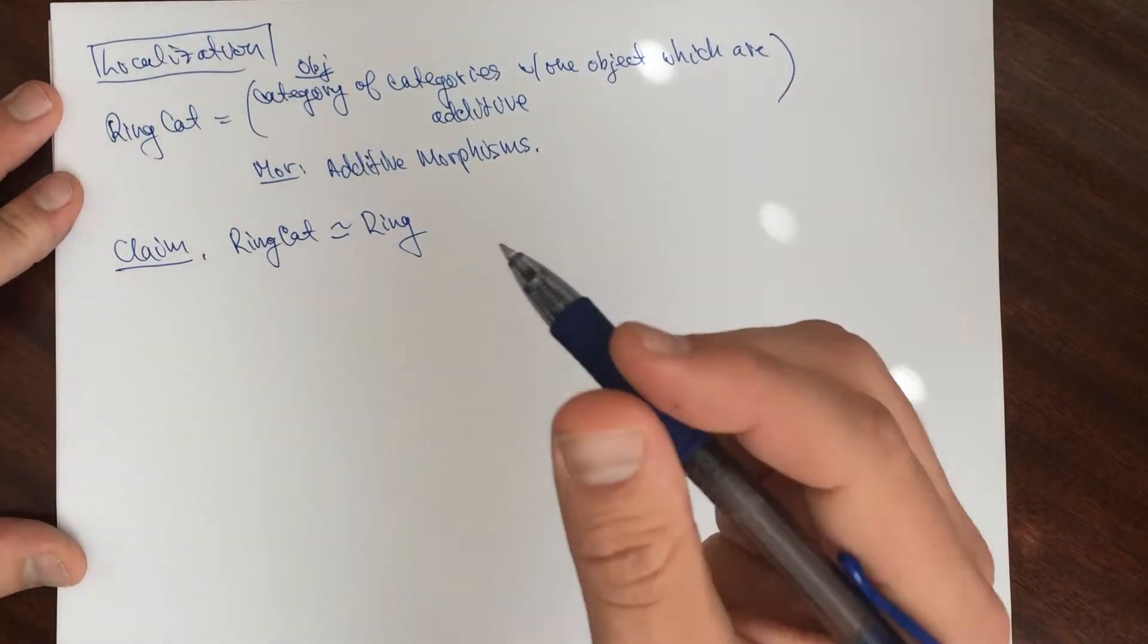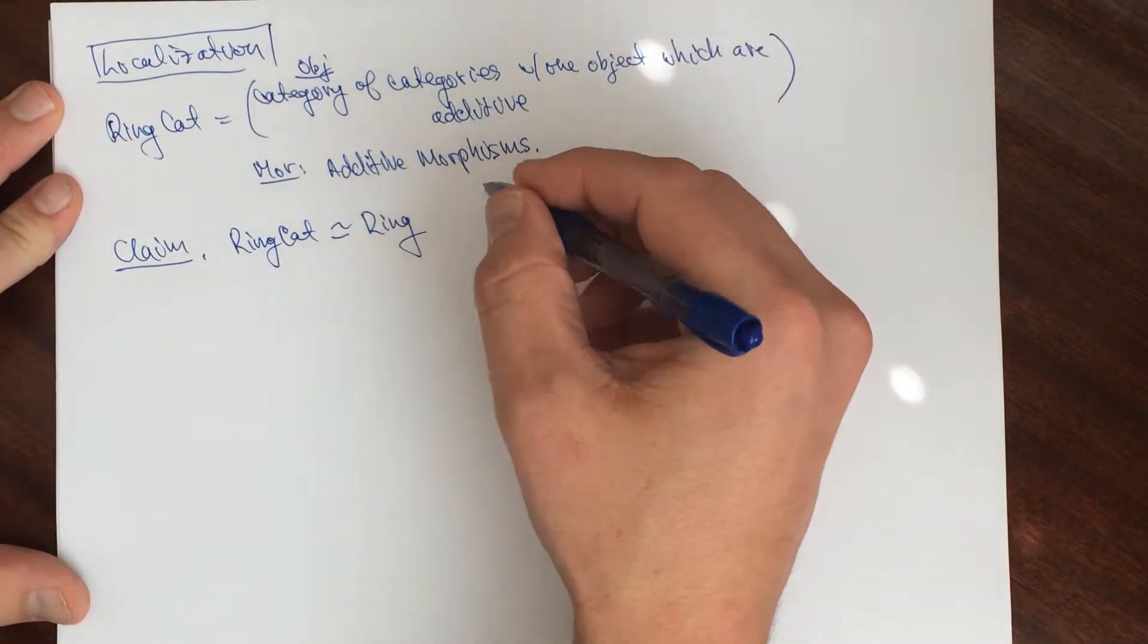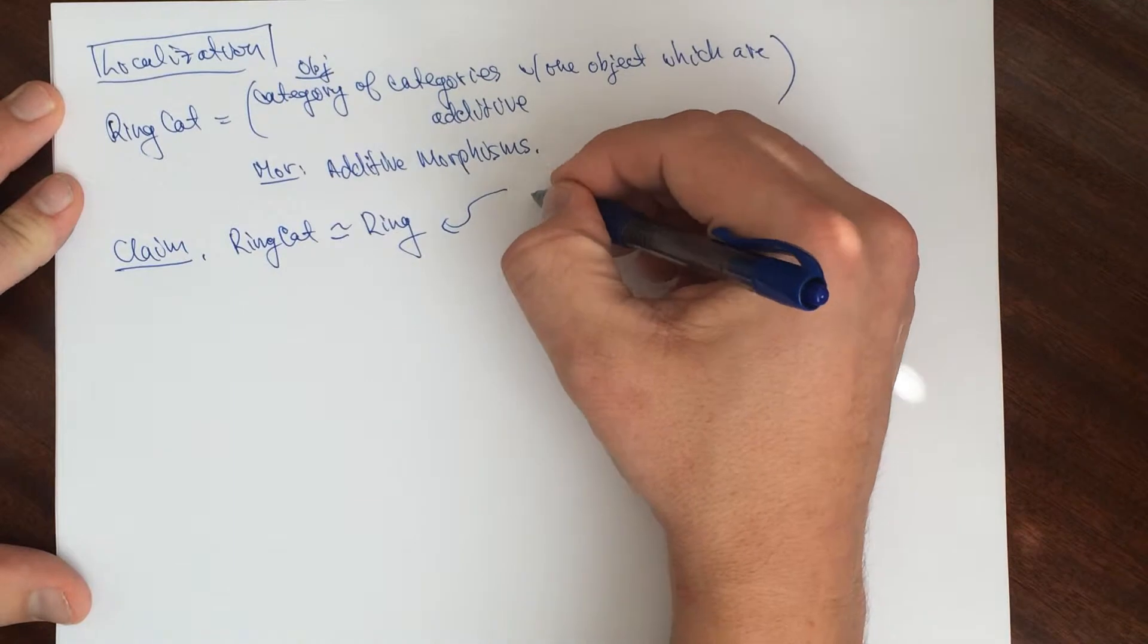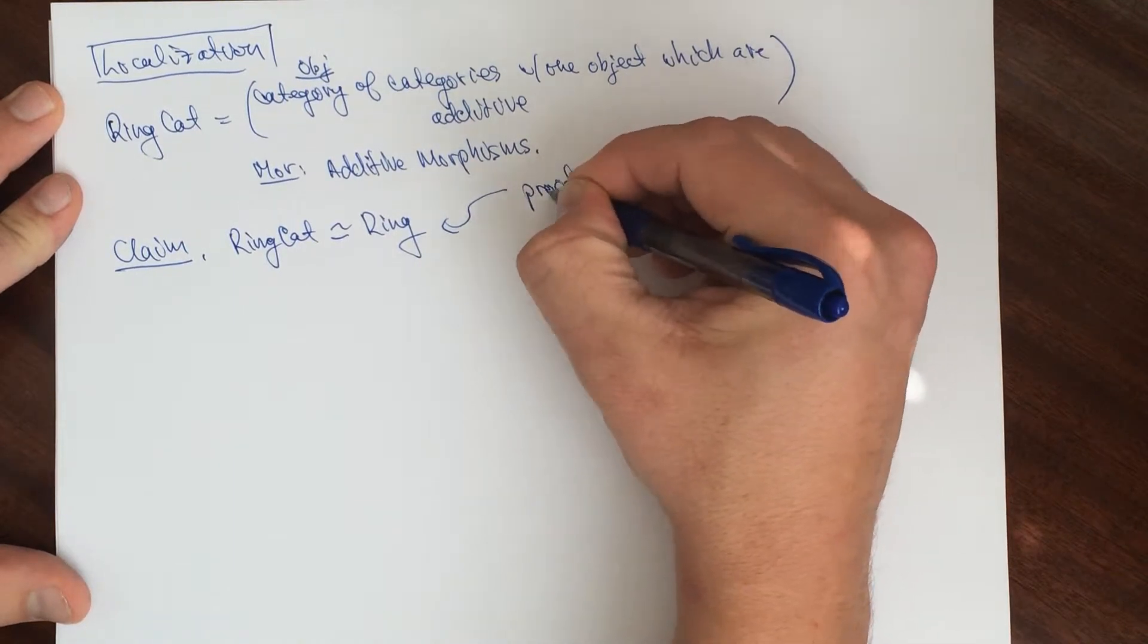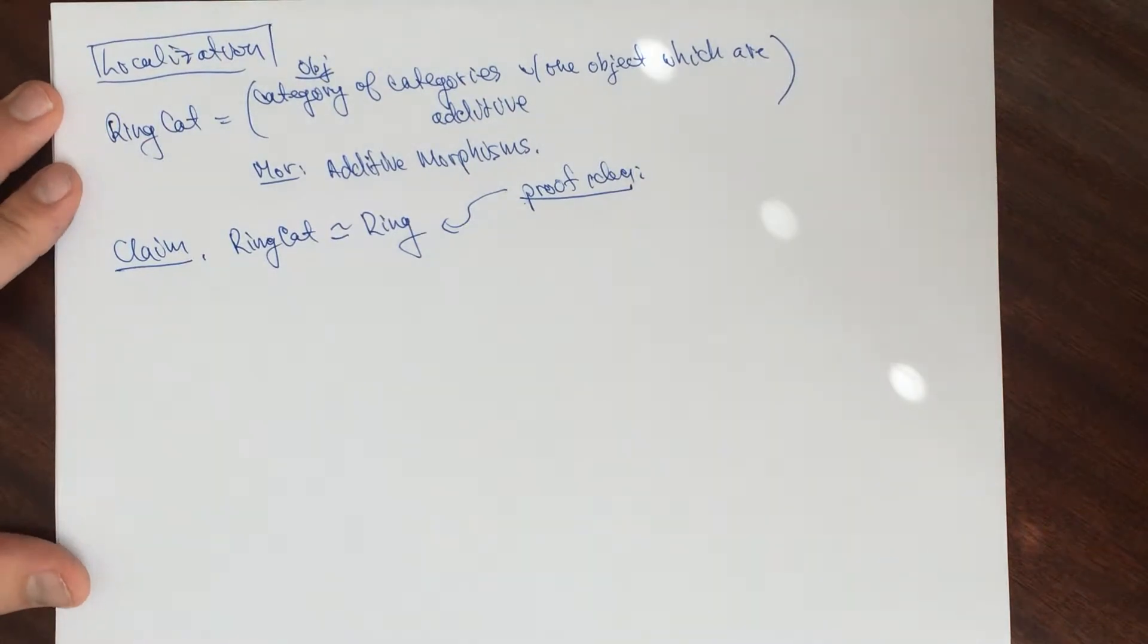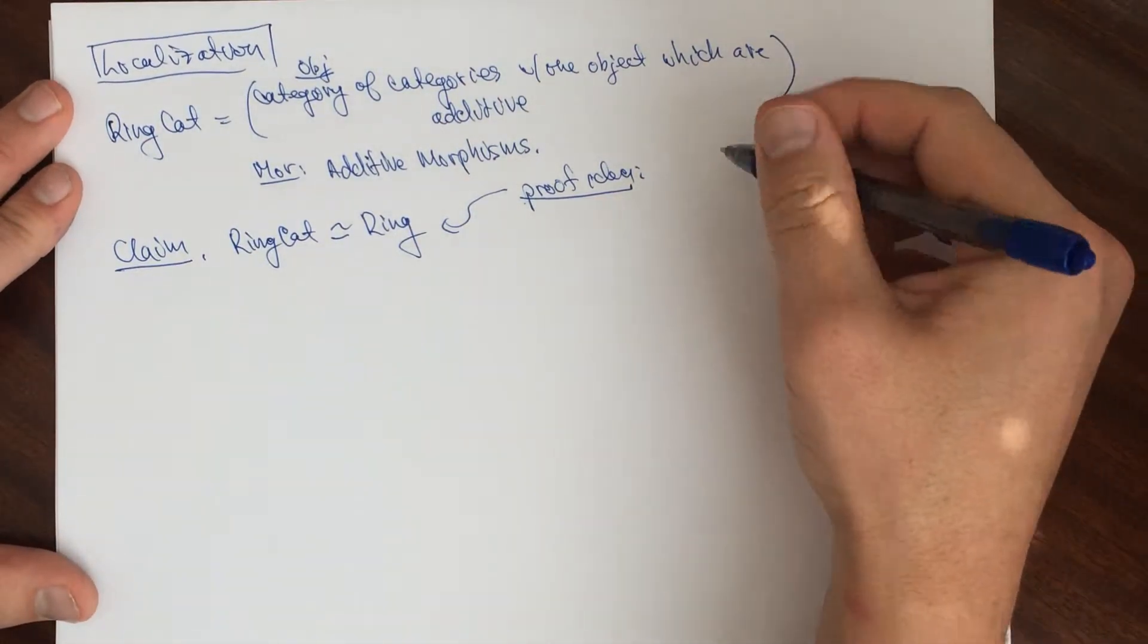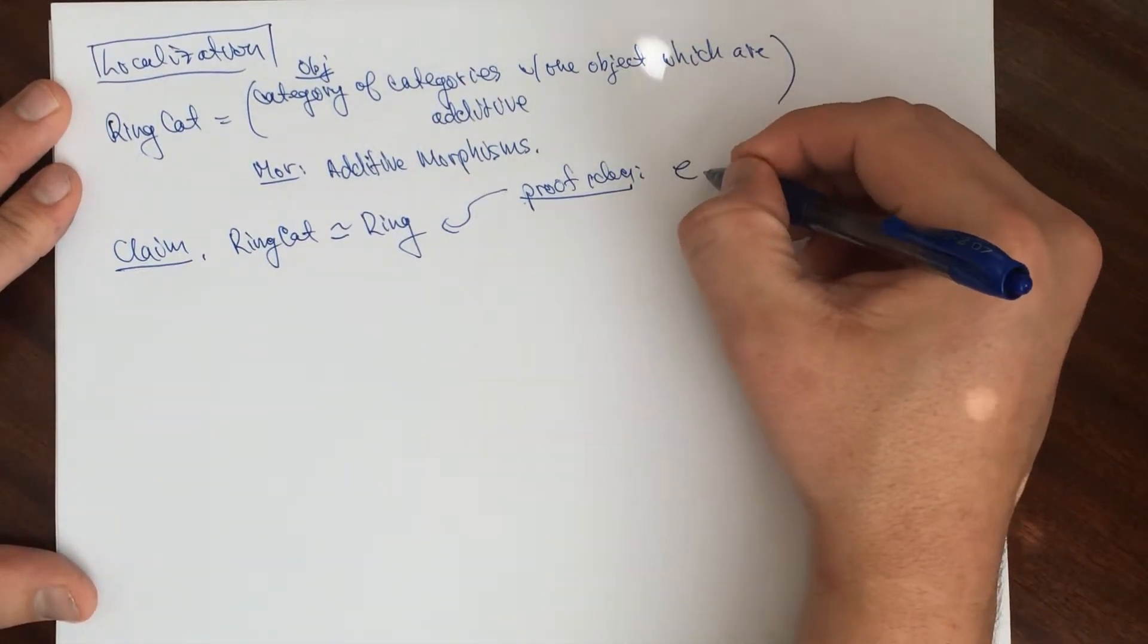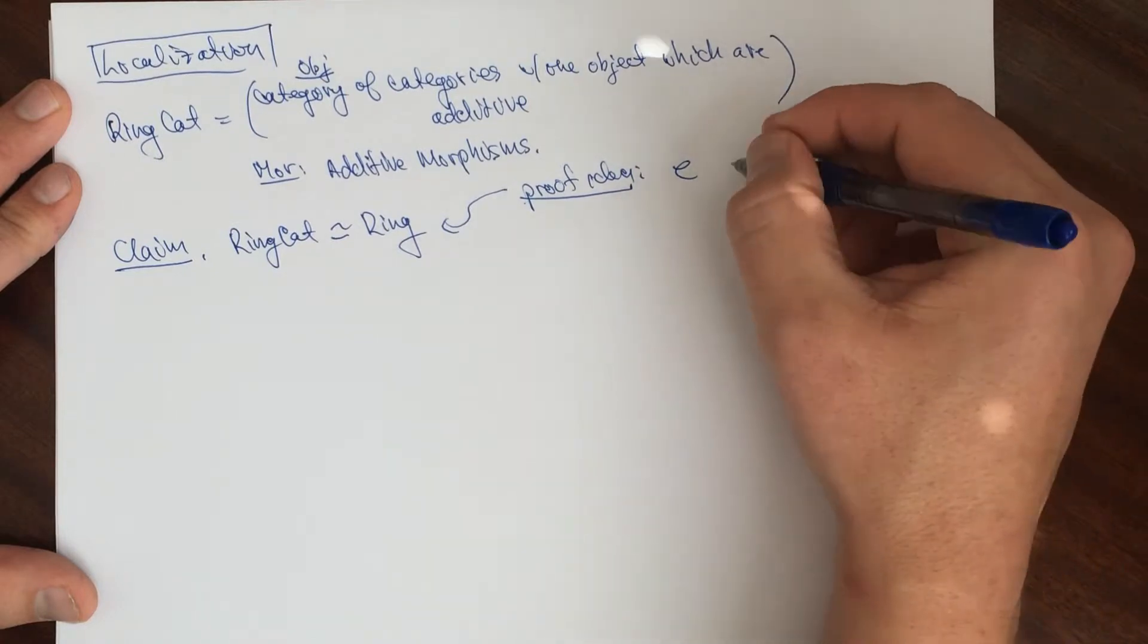Let me tell you the idea, the proof idea between this correspondence. Let's take an object here. Let's say C. And this is going to be a ring category.